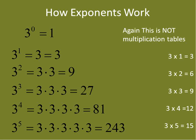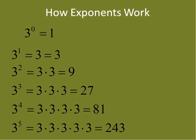I want to reemphasize this: exponents are not the same as multiplication tables. 3 to the power of 1 happens to equal 3 times 1, but after that none of them match up. 3 times 2 is not the same as 3 to the power of 2, and 3 times 3 is not the same as 3 to the power of 3. Get the idea of multiplication tables out of your head — this is exponents, and they are very different.